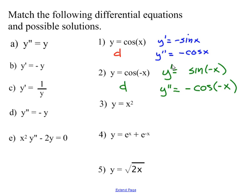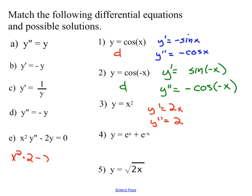Let's try number three: y = x². y prime = 2x, y double prime = 2. Checking A: y double prime = 2, does that equal y = x²? No. B: y prime = 2x, does that equal −y = −x²? No, not for all x. C: y prime = 2x equal to 1/y? Not for all x. D: y double prime = 2 same as −y? No. E: x² times 2 minus 2 times x² = 0. Yes! So number three is a solution for E.